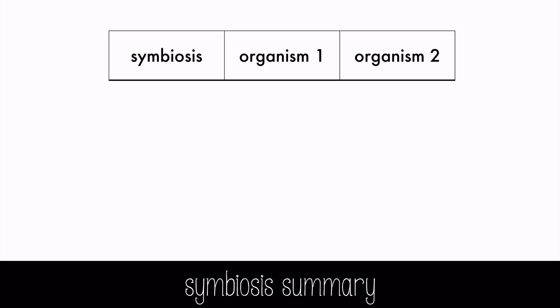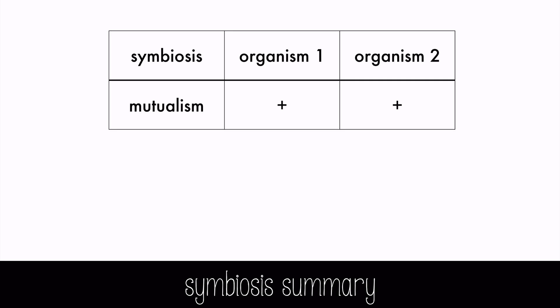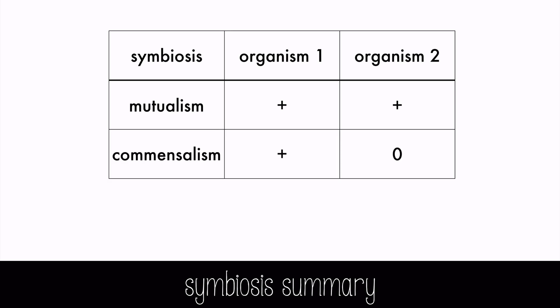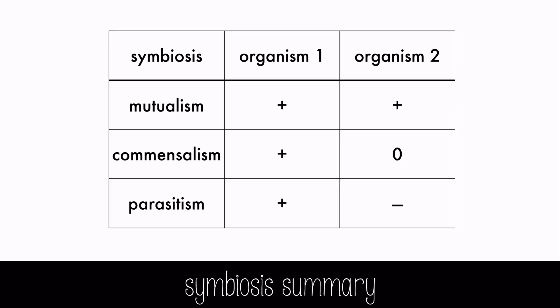To summarize the different types of symbiosis, we can make a little chart to quickly show the types of relationships. Mutualism benefits both organisms in the relationship. Commensalism benefits one organism but has no effect on the other. And parasitism benefits one organism and harms the other organism.